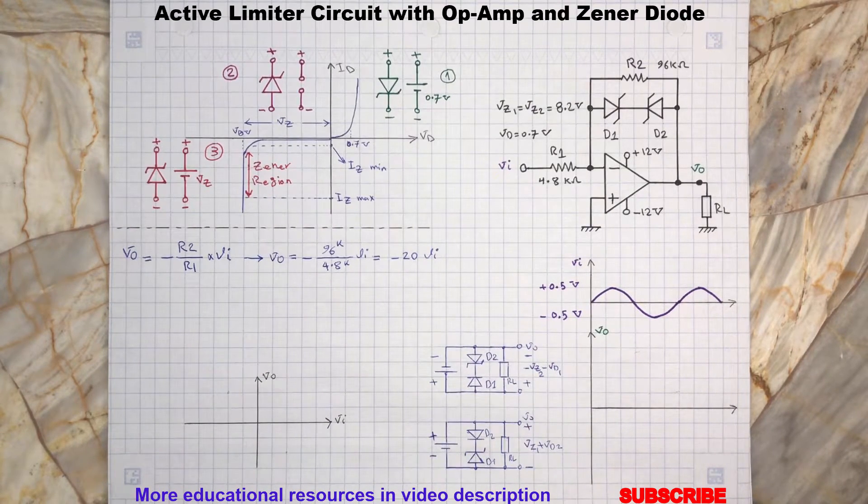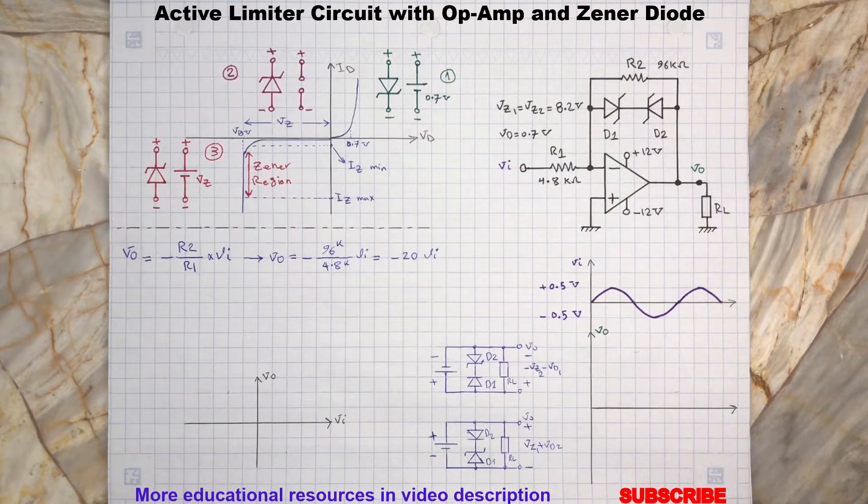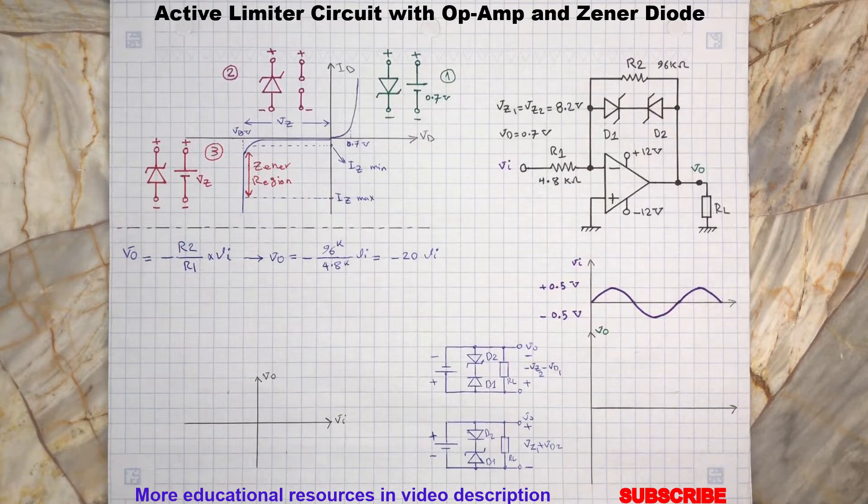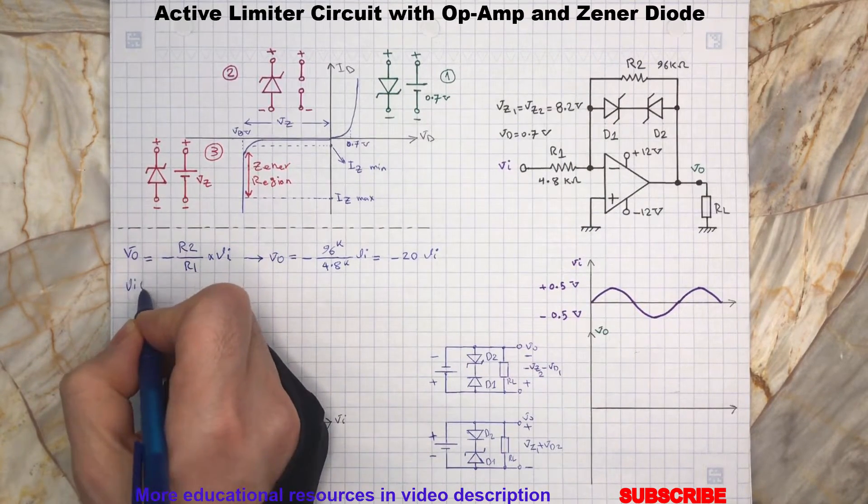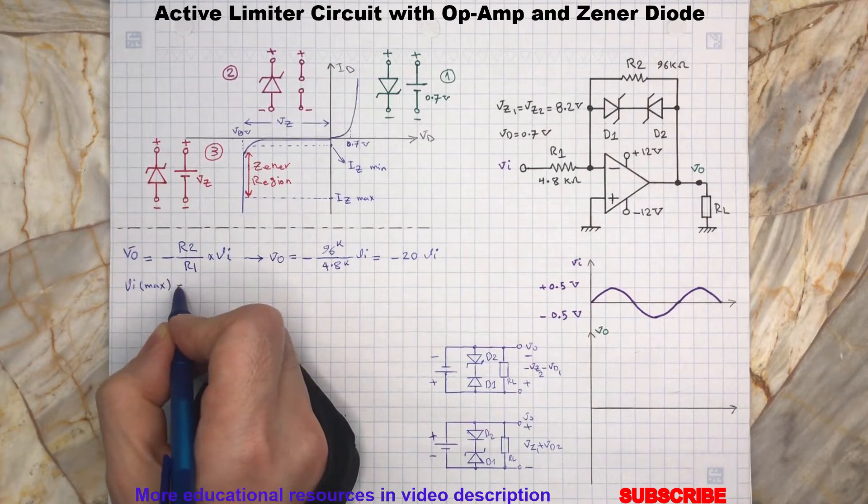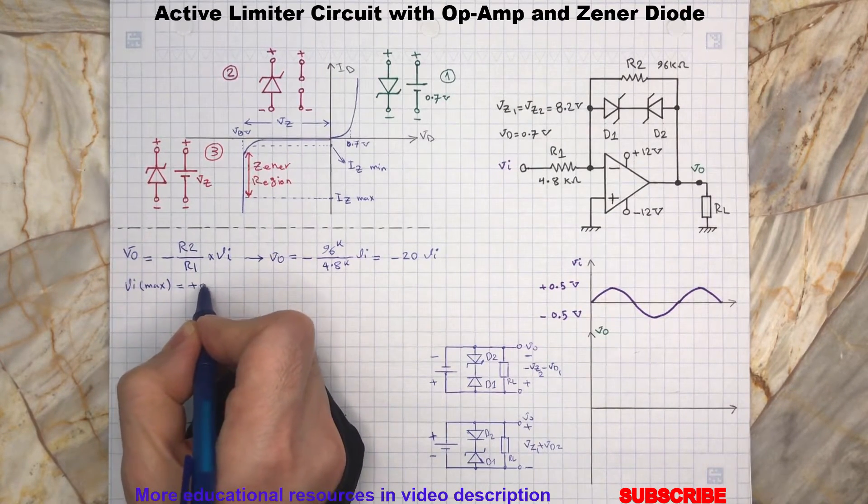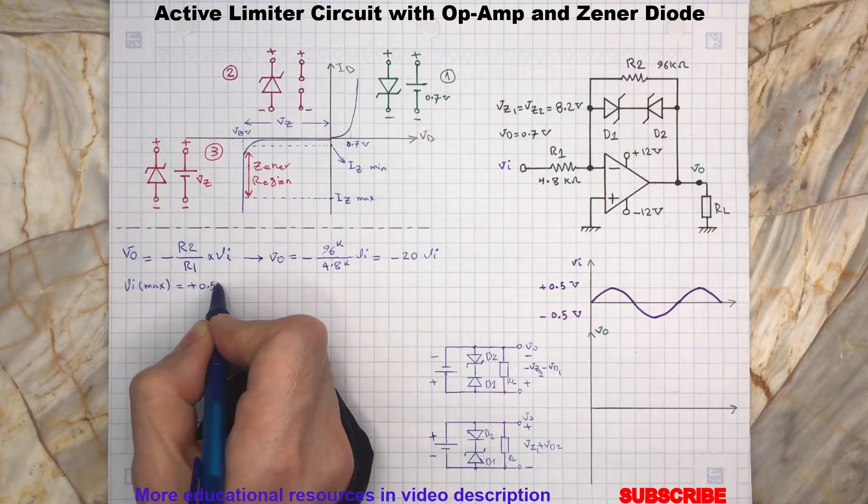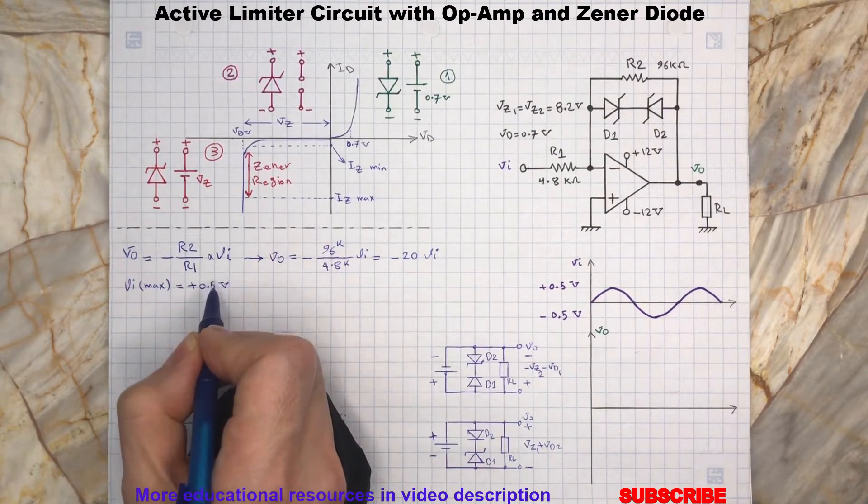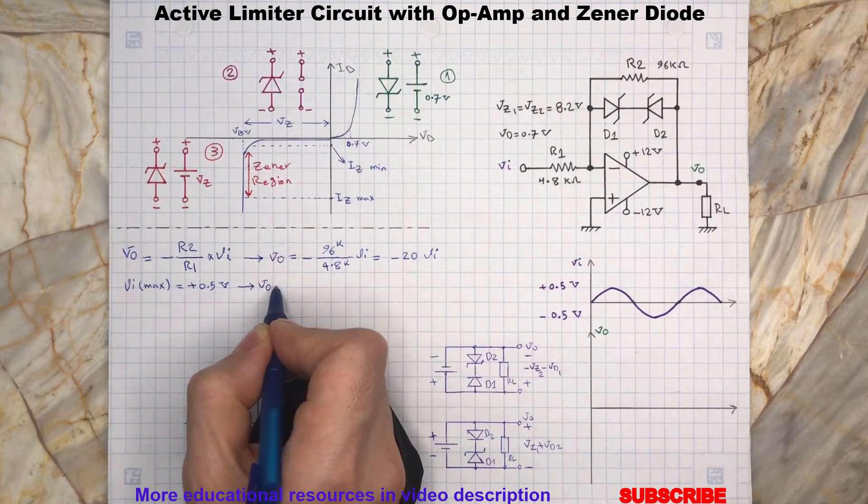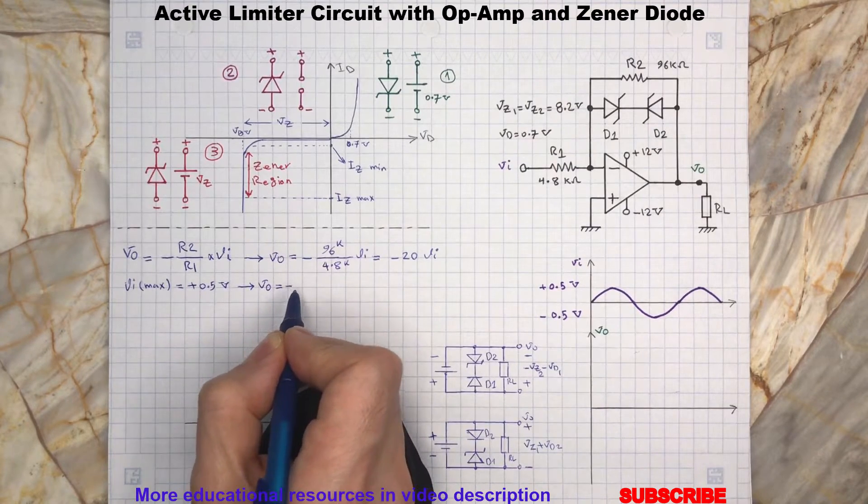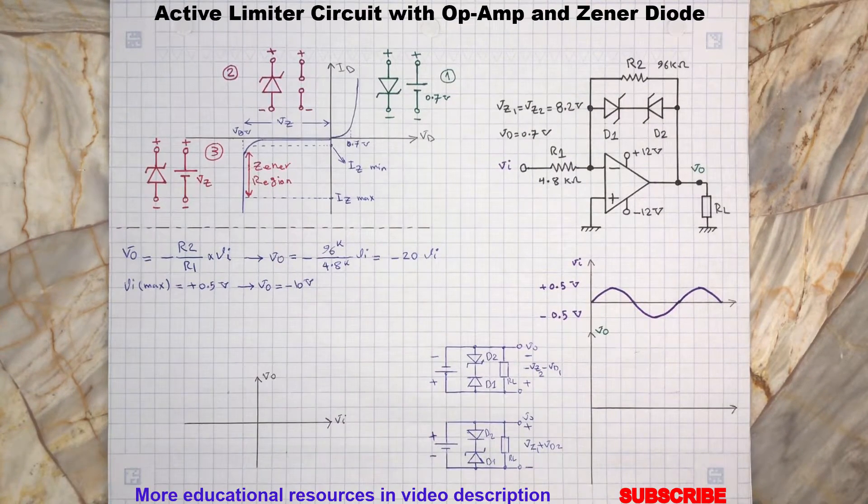Now when Vr is at its maximum possible, which is positive 0.5 volts, then Vo will be at its minimum. This is because of the inverting op-amp negative gain.